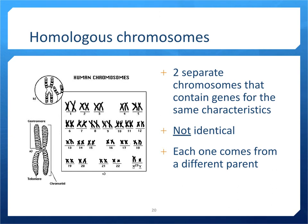Each human cell also has homologous chromosomes. These are two separate chromosomes that contain genes for the same genetic characteristics, but they are not identical. These chromosomes come from your parents — you always have one chromosome in each pair from your father and one from your mother. All of your genetic information comes from both parents, with one homologous chromosome from each pair coming from your mom and the other coming from your dad.